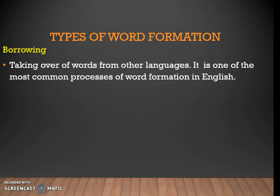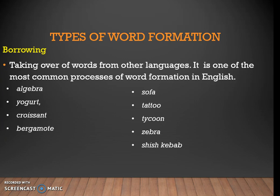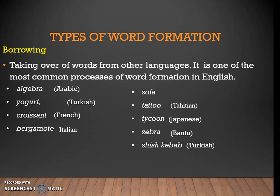The second type is borrowing — taking over words from other languages and adding them to the language. It is one of the most common processes of word formation in English. Words like algebra, yogurt, croissant, bergamot, sofa, tattoo, tycoon, zebra, and shish kebab are borrowed — for example, shish kebab came from Turkish and sofa from Arabic.